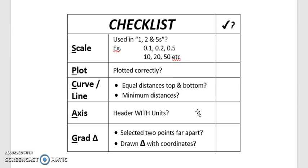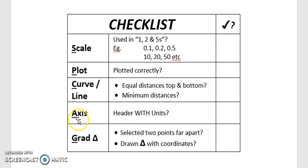In summary, your checklist for plotting graphs is SPCAG: S — Scale, remember the three magic numbers 1, 2, 5. P — Plot correctly with X marks. C — Curve or best fit line, with equal distances top and bottom and minimum distances. A — Axis labels with variable slash unit format. G — Gradient triangle with two far-apart points, coordinates indicated, and the gradient formula applied. Tick all five and you're good to go!